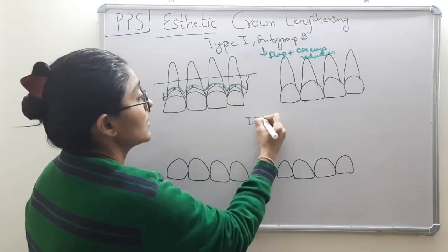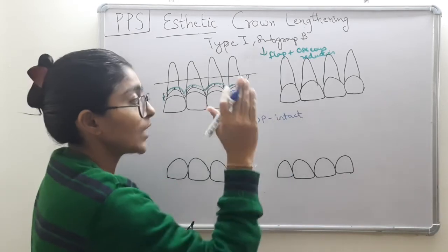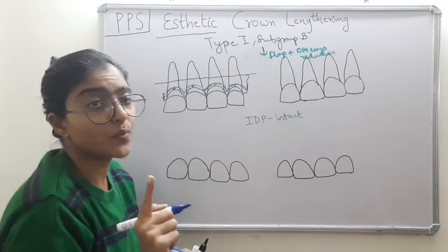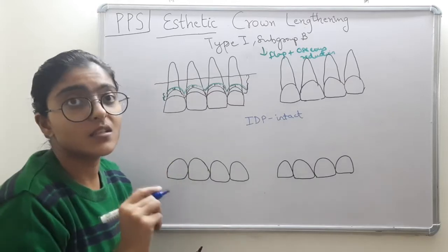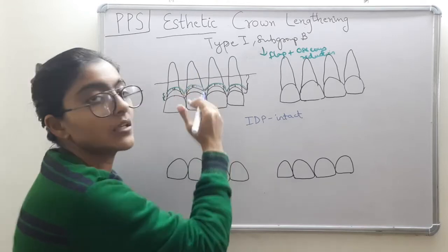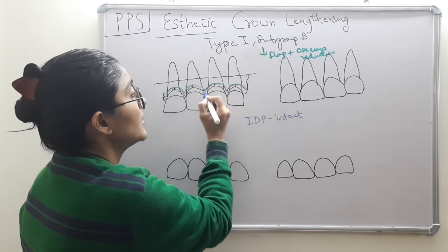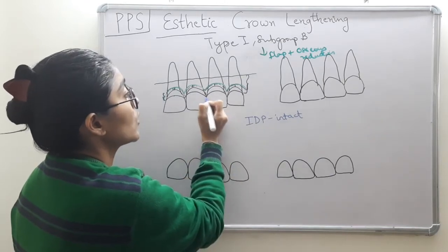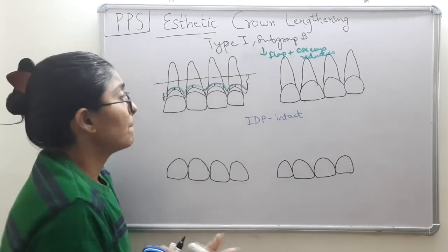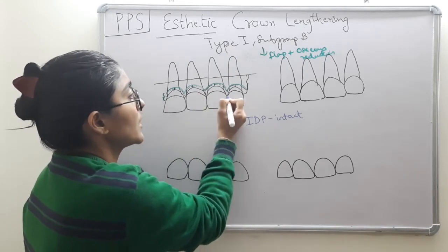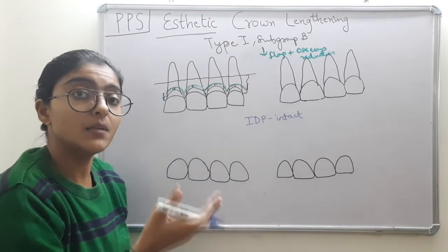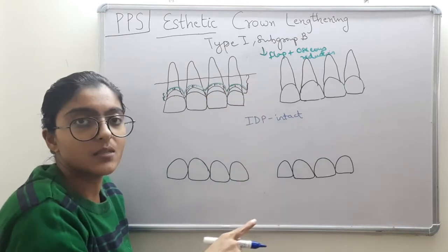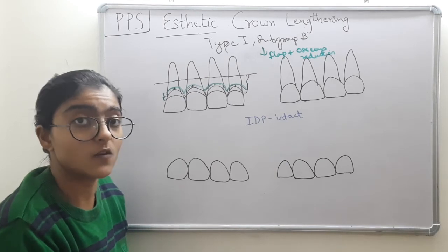The first and most important rule is that interdental papillae are kept intact. If we perform a regular full-thickness mucoperiosteal flap incision, the interdental papilla will shift apically along with the free gingival margin. But the contact point will remain at the same place. By shifting the papilla apically we would create black triangles — trading one aesthetic problem for another.